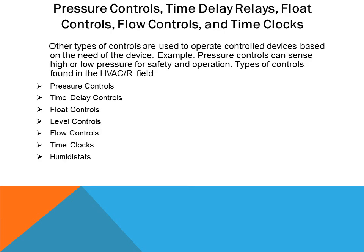There are other types of controls used to operate controlled devices — anything that consumes current such as light bulbs, electric heaters, blower motors, fan motors, and circulating pumps. Pressure controls can sense high or low pressure for safety and can turn things on and off when pressure is correct. Other types of controls in the HVAC field include time delay controls, float controls, level controls, flow controls, time clocks, and humidistats.